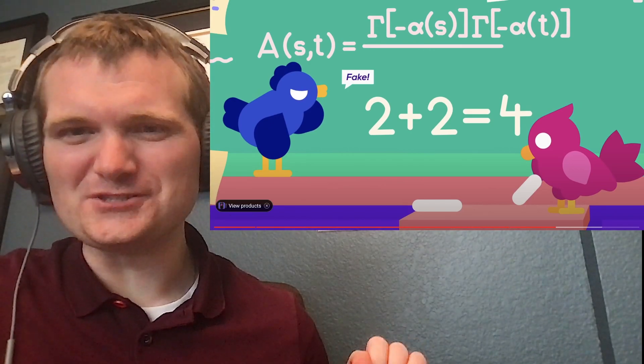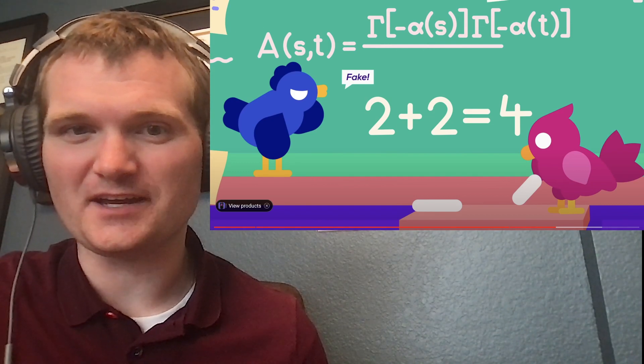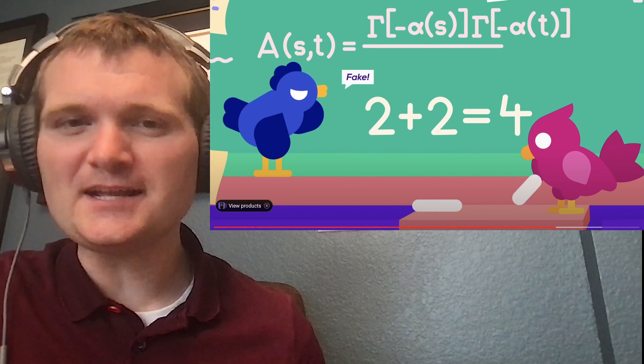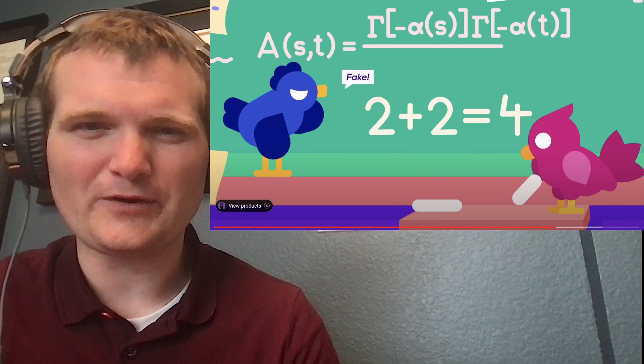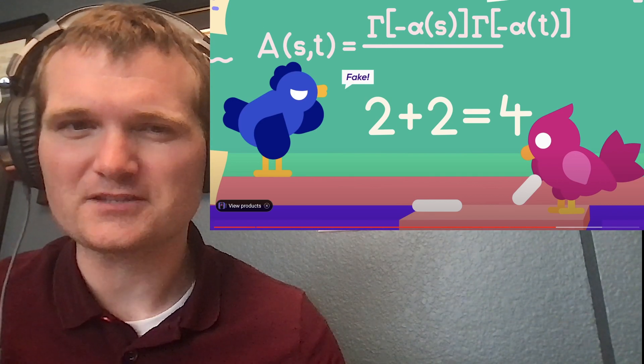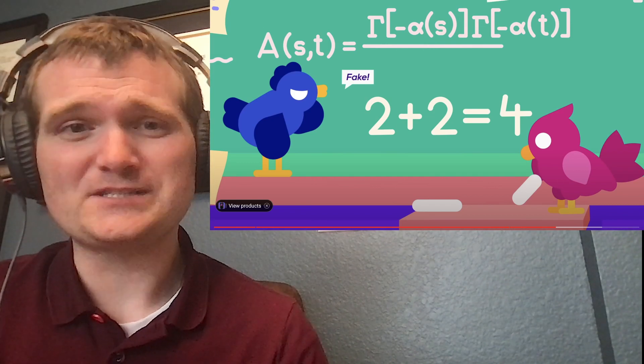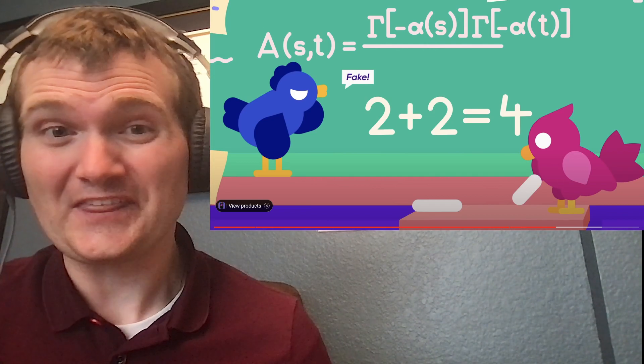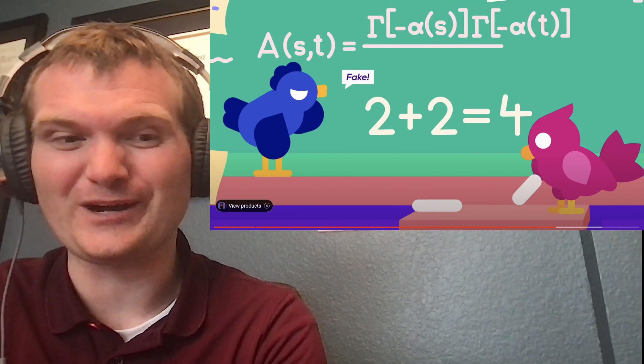This reminds me of an old joke. So a physicist or a scientist would say 2 plus 2 is 4. An engineer would say, yeah, we know it's 4, but I'm just going to go ahead and say 2 plus 2 is 5. Because, you know, just to add a little bit of extra safety margin to our thing. A nuclear engineer would take it a step further and say 2 plus 2 is about a thousand. To give you a sense of how much safety margin we put in our nuclear power plants.